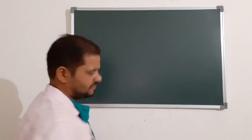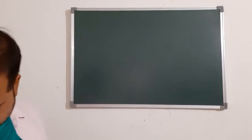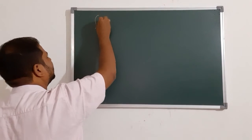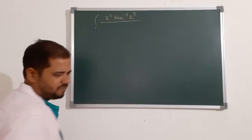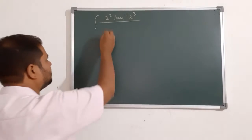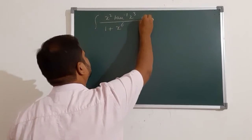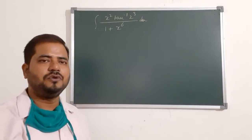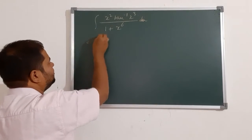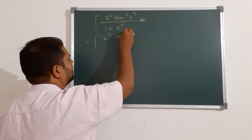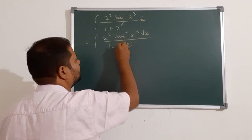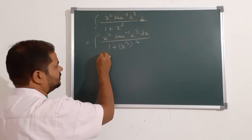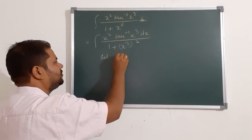Next question is from NCERT also: integral of x squared times tan inverse (x cubed) divided by (1 plus x to the power 6). This question can be solved by substitution. So first, we have x squared times tan inverse (x cubed) divided by (1 plus x to the power 6). Now let x cubed equal to t.